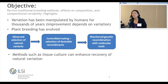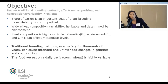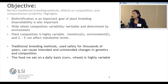We also heard about tissue culture and how that can enhance recovery of variation. The key point I want to make is that we know composition is highly variable. We know that genetics, environment, G by E, and sometimes year can also affect metabolite levels. We know that traditional breeding methods have been used safely for thousands of years — these can cause intended and unintended changes in genetics and composition. The food that we eat on a daily basis, such as corn and wheat, is very highly variable.